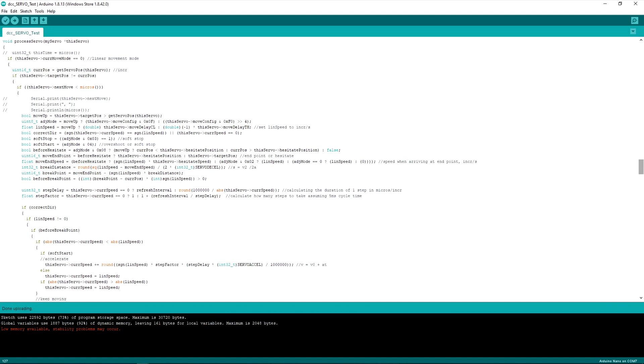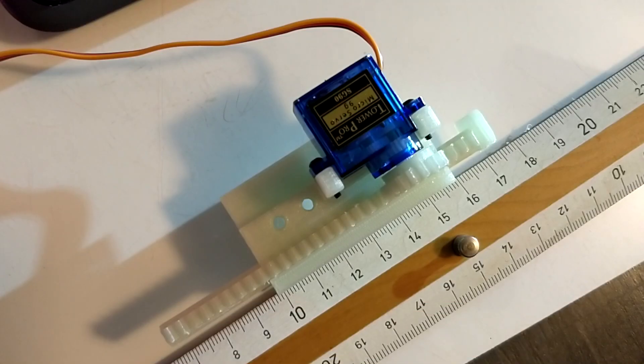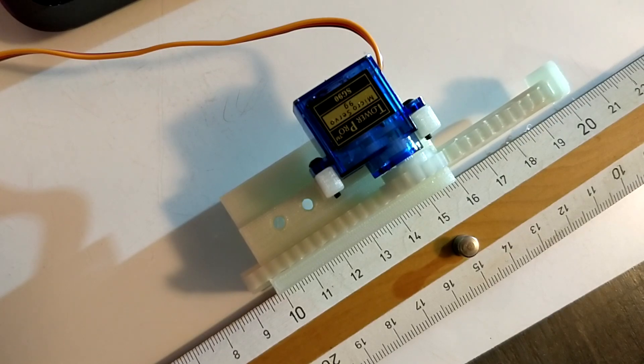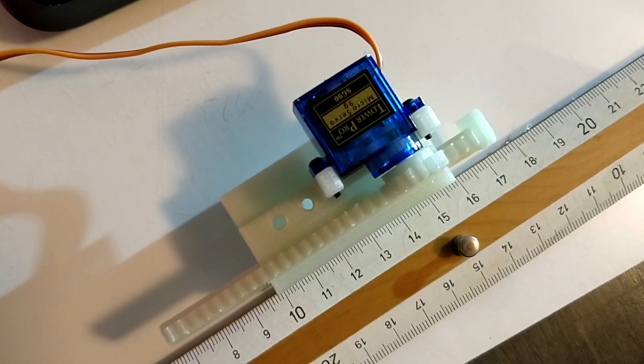So it is no surprise that I got a request to add these features to my servo decoder. In this video I'm going to show you the results and explain how I changed the Arduino sketch to make these non-linear moves happen.